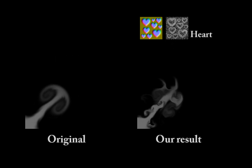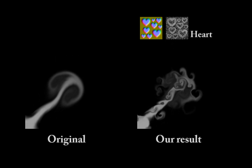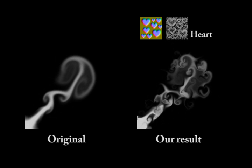Our synthesized motion can be used to render a variety of phenomena. Here we use the heart-shaped result to render smoke.